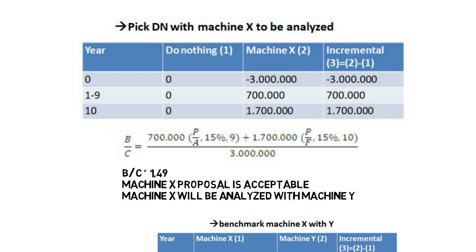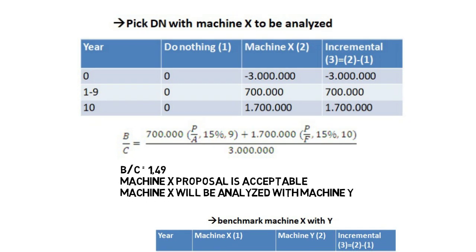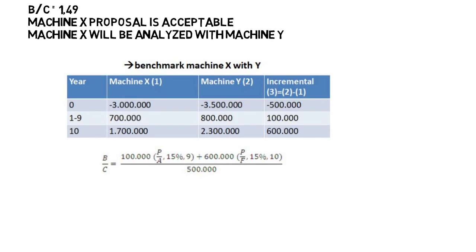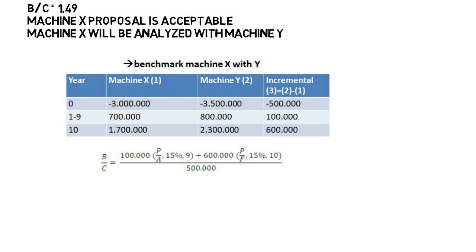Next, Machine X is analyzed against Machine Y. We perform incremental analysis by subtracting the Machine X cashflow from the Machine Y cashflow. The resulting BCR value is 1.45. Since this is also greater than one, Machine Y's proposal is more acceptable, and Machine Y is selected as the final decision.